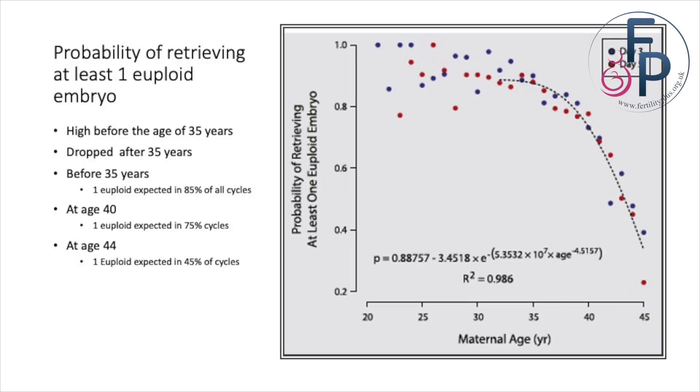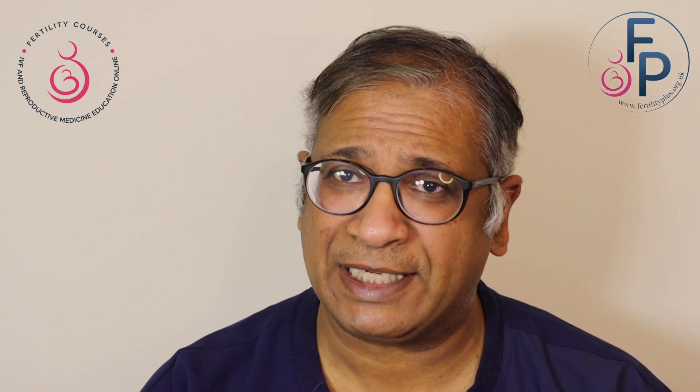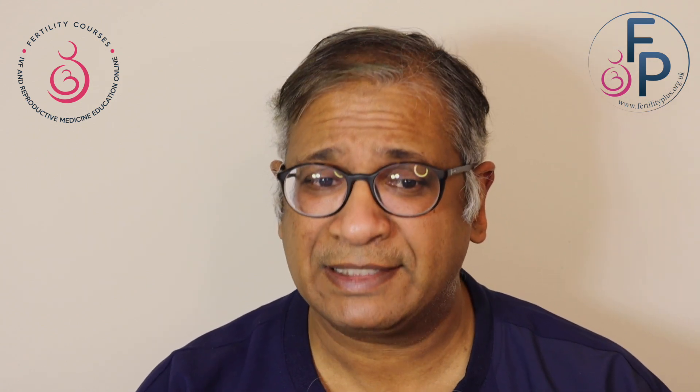The probability of retrieving at least one euploid embryo was high before the age of 35, after which it starts dropping. By age 35, one euploid embryo is expected in about 85% of cycles — though even in young women, all embryos may come back genetically abnormal. At age 40, one euploid embryo was expected in 75% of cycles, and by age 44, in about 45% of cycles.